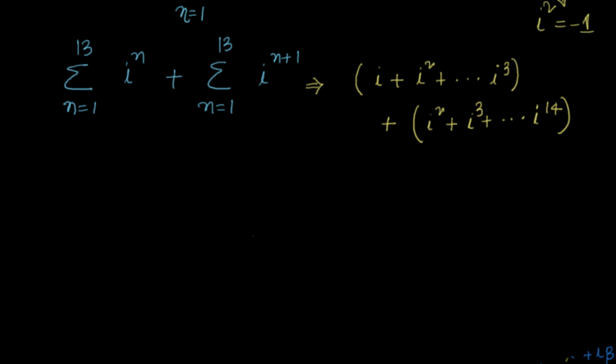So we will try to simplify this. For that, what we will do. We see that other than i and i^14, remaining all terms are repeating 2 times. So can I simplify that and say it is nothing but i, the first term here, and the last term which is i^14, plus I have everything repeating 2 times. So why can't I say 2(i² + i³ + ... + i^13).